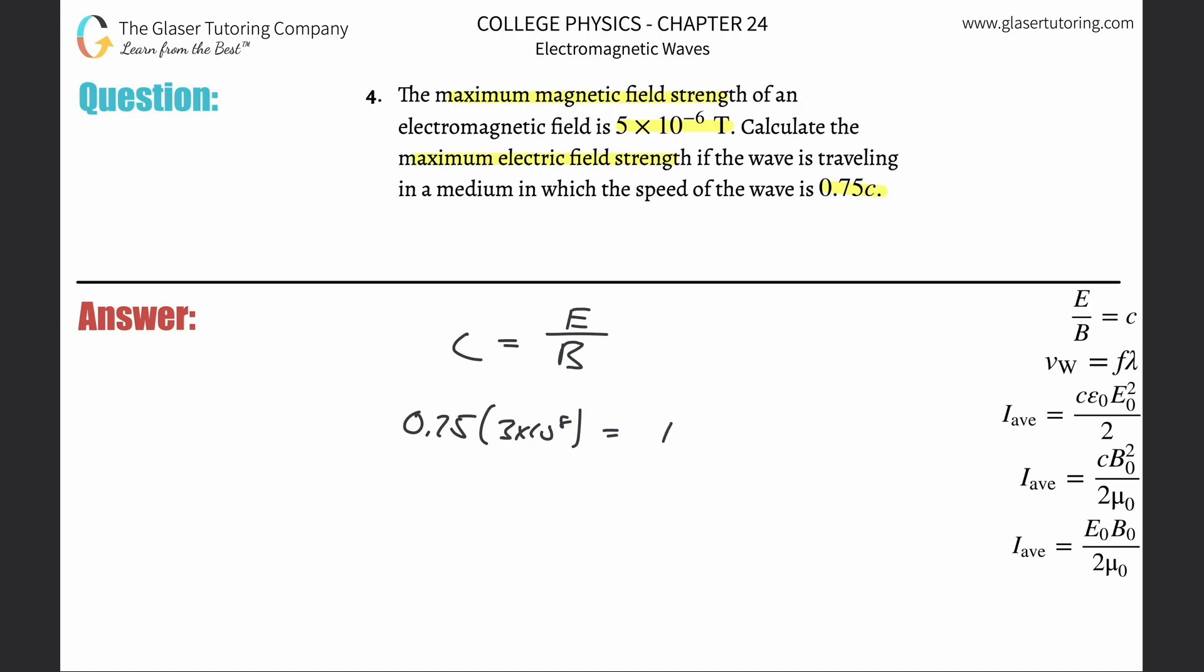We're going to plug this in. Electric field strength is what we're trying to calculate. The maximum magnetic field strength they told us was five times ten to the minus six.